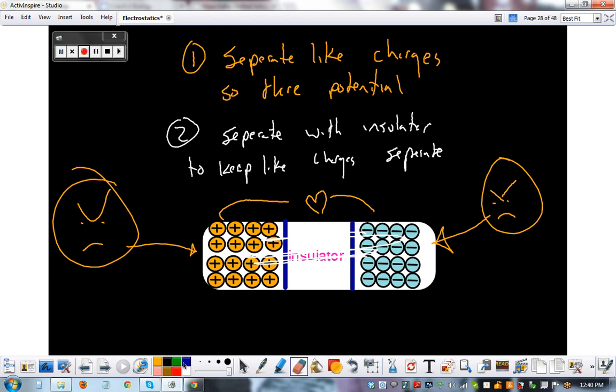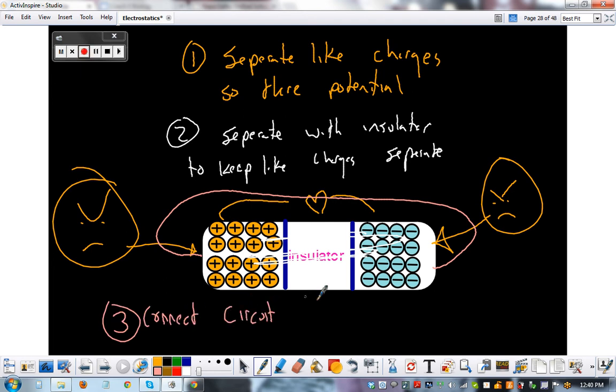And finally, number three, we draw. This is what we did in class. If you're in Hawaii, you missed this. But number three is to connect the circuit so charges can equalize. And what these guys do is once the wire is connected, they can go whoa and fly around, and the charges can equalize until we are all good.